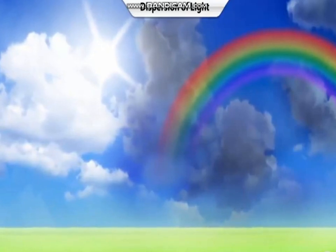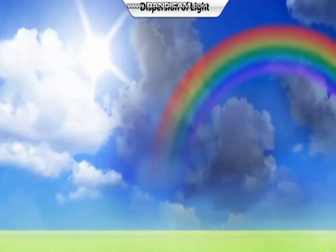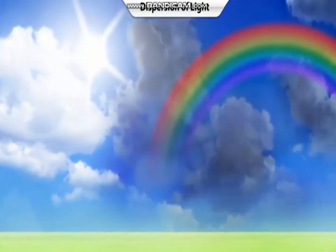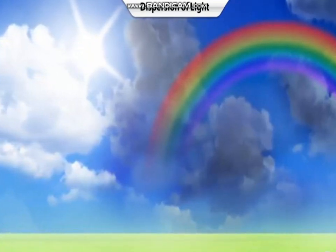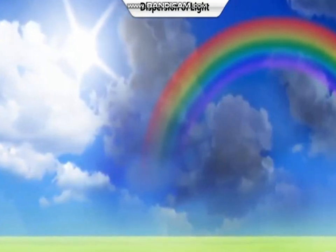Have you ever wondered why you see a rainbow in the sky just after a rain? Where do these vibrant colors come from? Well, this can be explained by the phenomenon of dispersion of light. Let's see how we can create this rainbow ourselves.